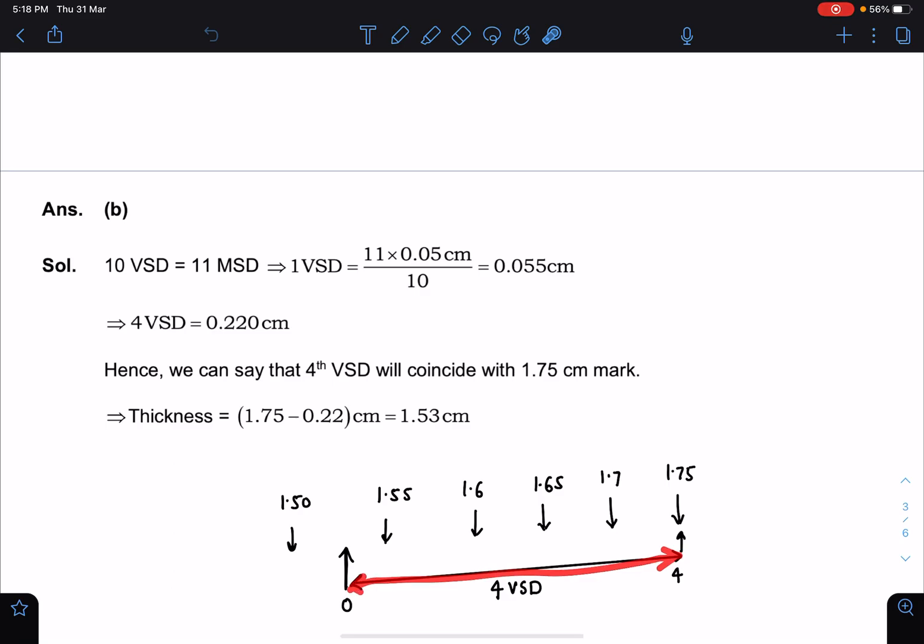So in this case, from here till here, this is going to be the length of object. So we can say that x plus 4 VSD is equal to 1.75.